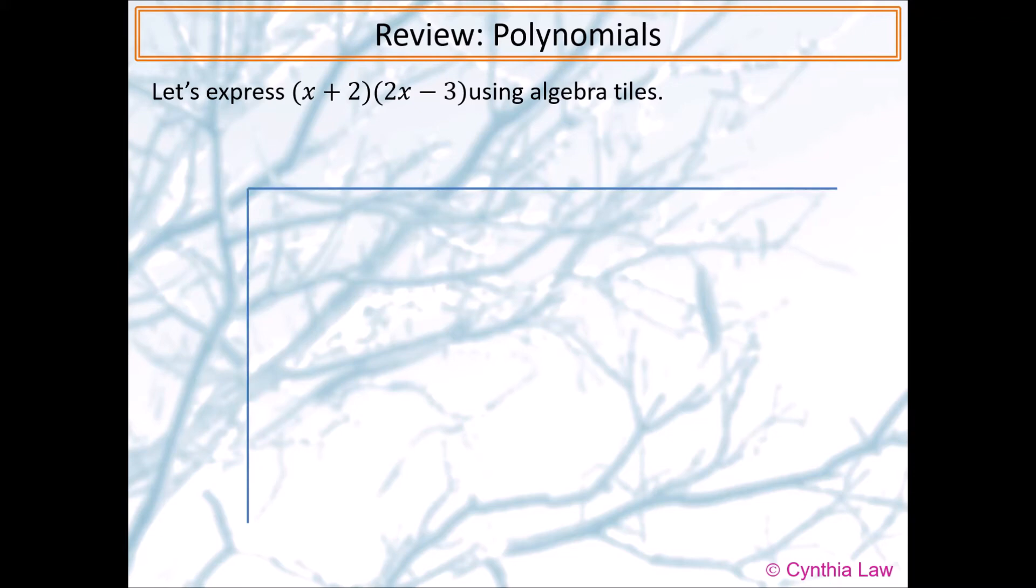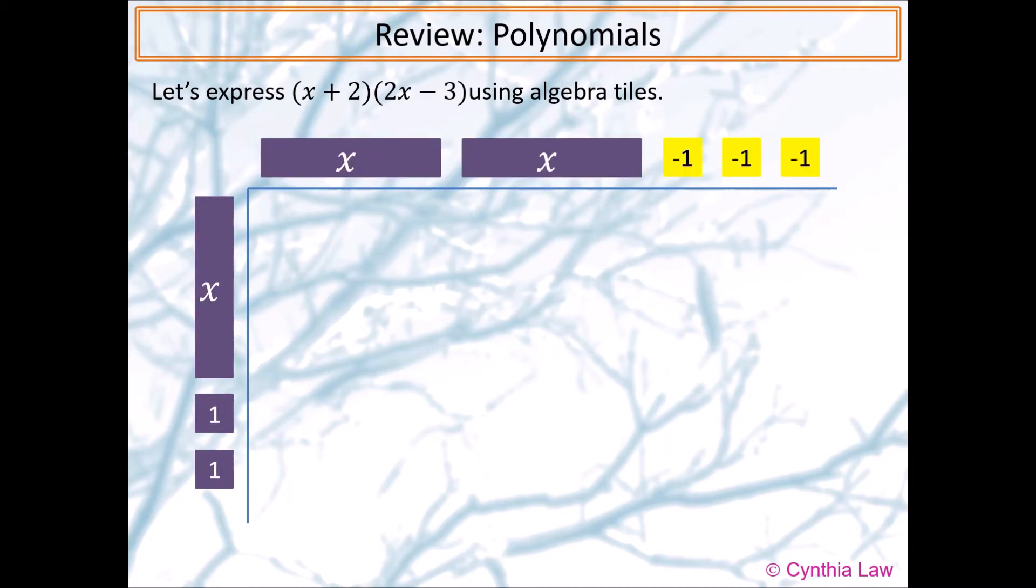So we will set up the space as follows. First, we use algebra tiles to label the width and the length of the rectangle. The width is x + 2 and the length is 2x - 3.